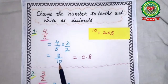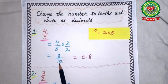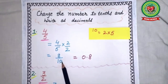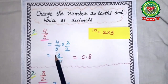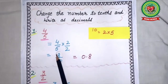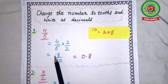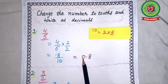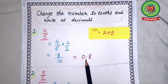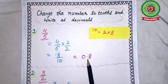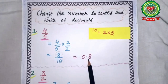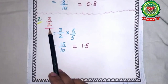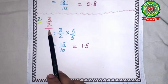Now we will convert it into decimal. How many zeros? 1. We will shift the point by one digit. The point will come before 8; since there is no digit before it, we put 0. So the answer is 0.8. The second sum is 3 upon 2. What is the denominator? 2.